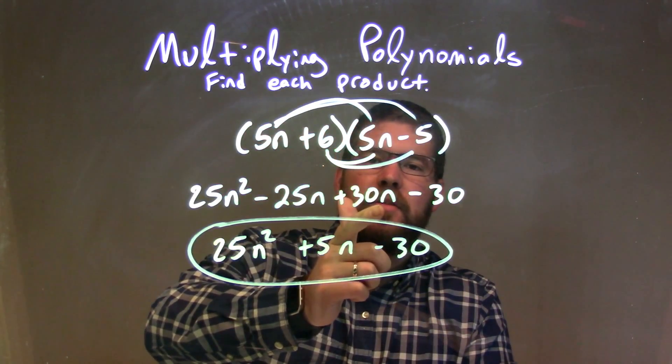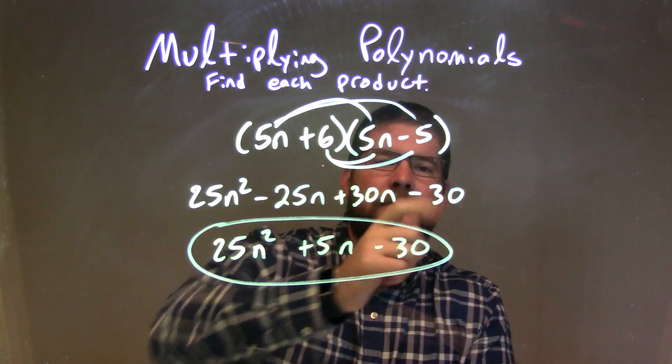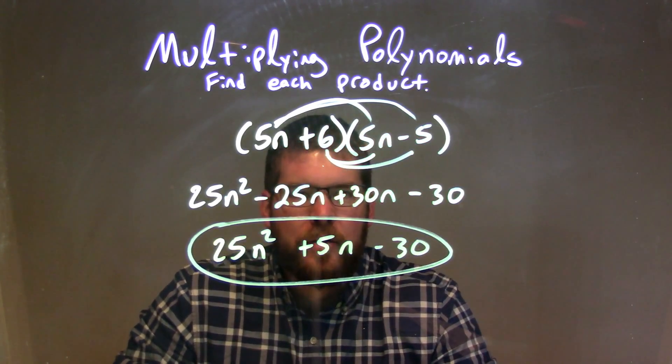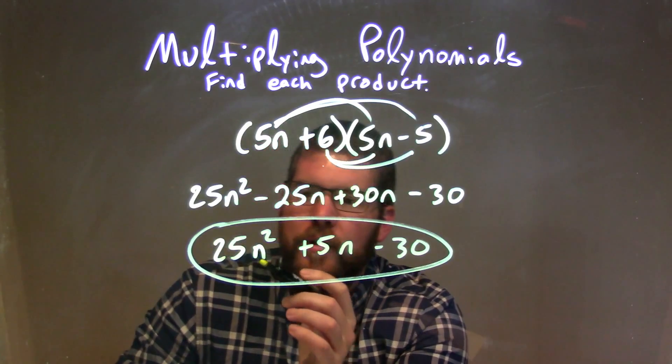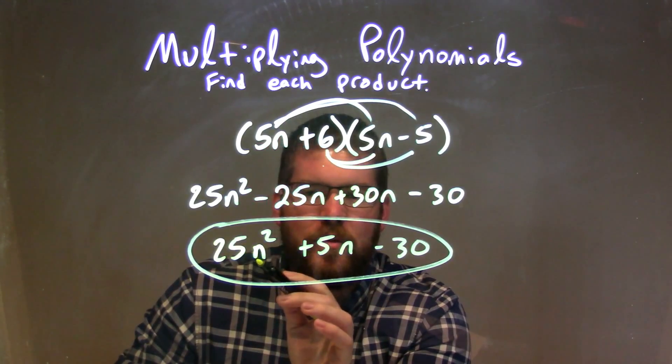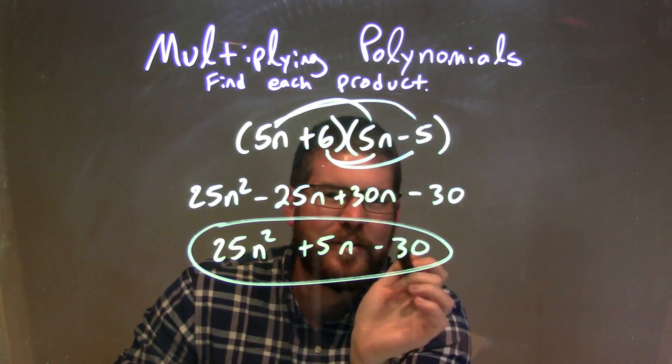6 times 5n is plus 30n, and 6 times minus 5 is minus 30. We then combine our like terms, which is just the n's in the middle. And so our final answer is 25n squared plus 5n minus 30.